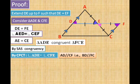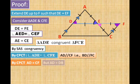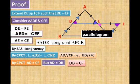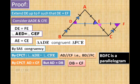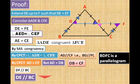Since angle ADE equals angle CFE and they are alternate interior angles, AD is parallel to CF — that means BD is parallel to CF. By CPCT, AD equals CF. But AD equals DB since D is the midpoint, so BD equals FC. Therefore one pair of opposite sides of quadrilateral BDFC are both parallel and equal, making BDFC a parallelogram. In a parallelogram, opposite sides are parallel, so DF is parallel to BC. Since DE is part of DF, DE is parallel to BC — the first part is proved.